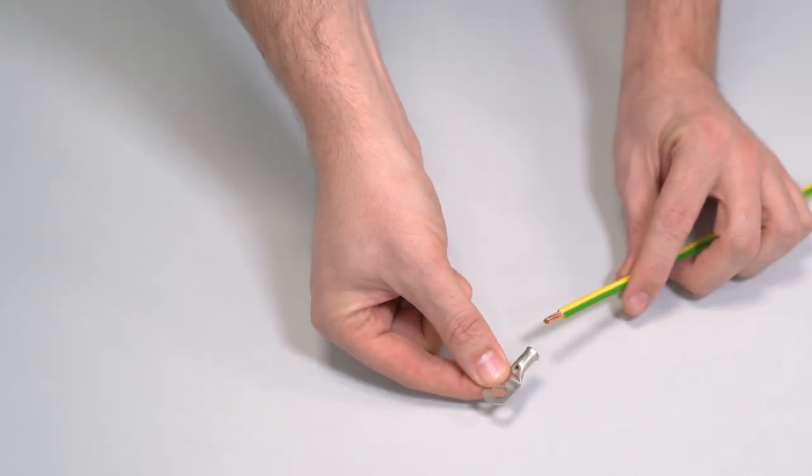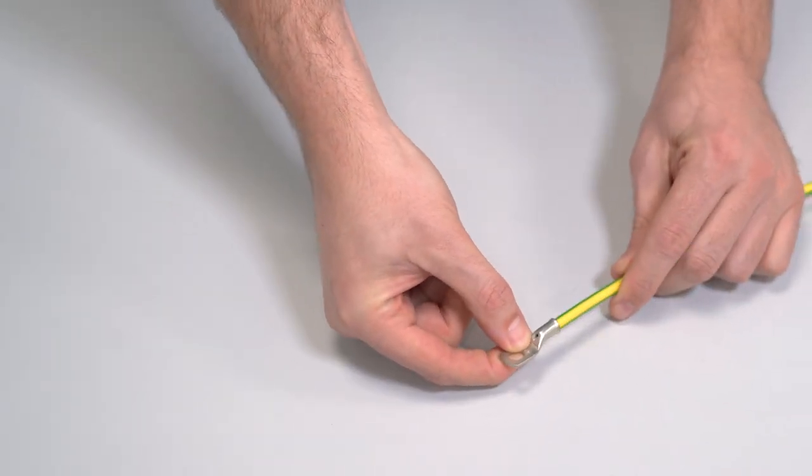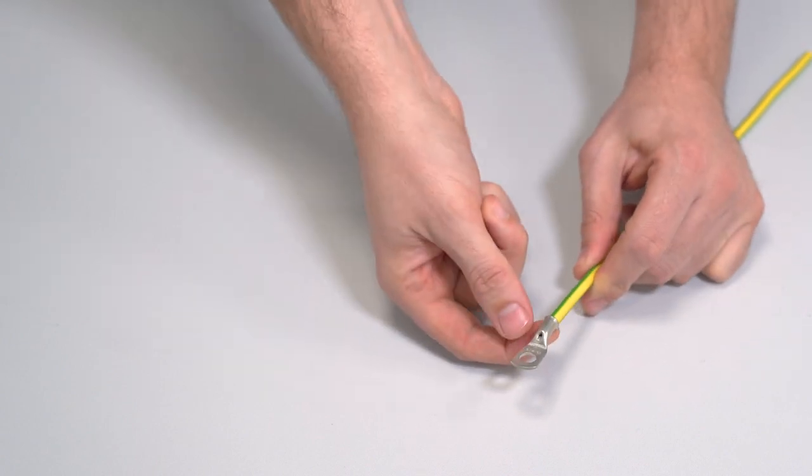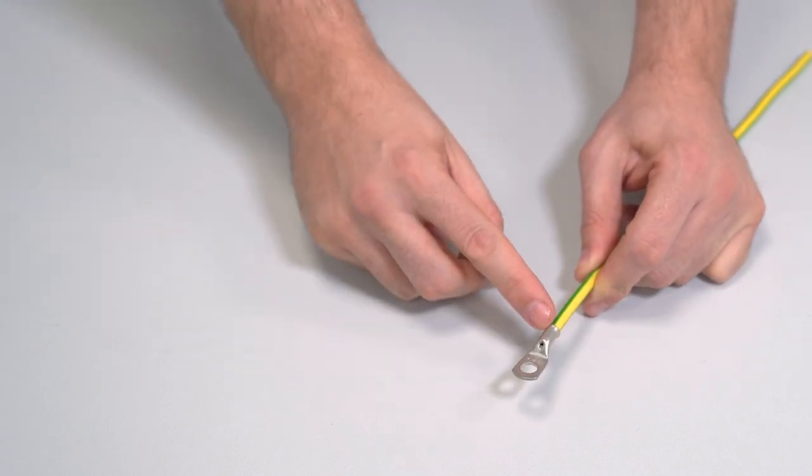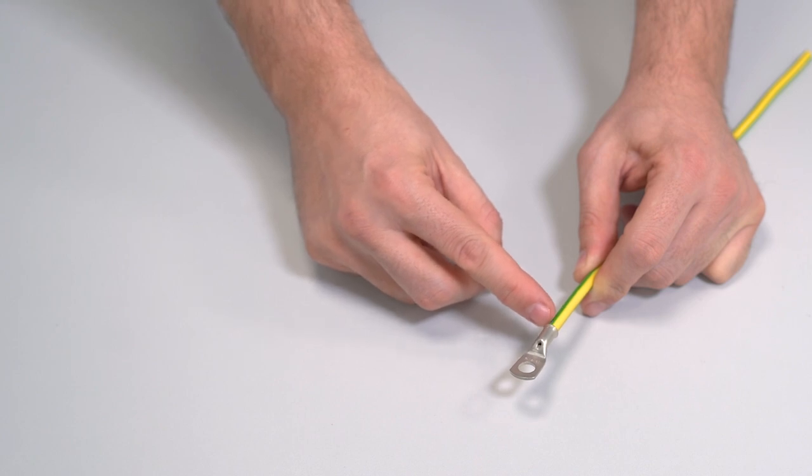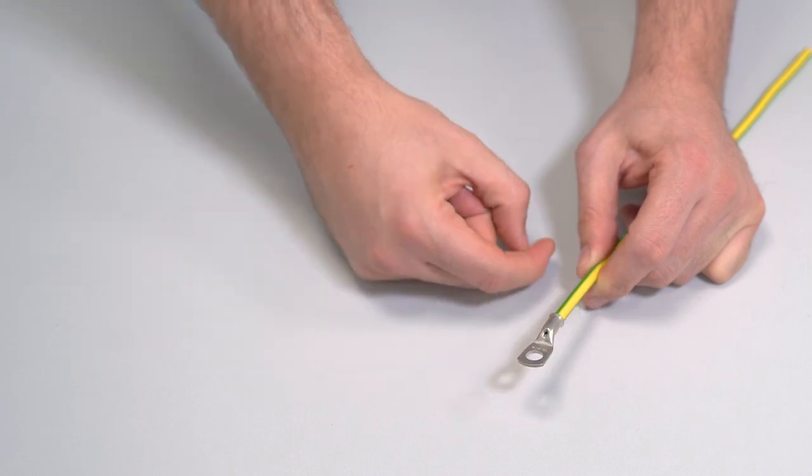So this lug we pop on our 10mm cable, and what's going to happen now when I compress it down with the crimping tool, it's going to slowly compress this bit of metal here and leave us with a nice tight termination on the cable.